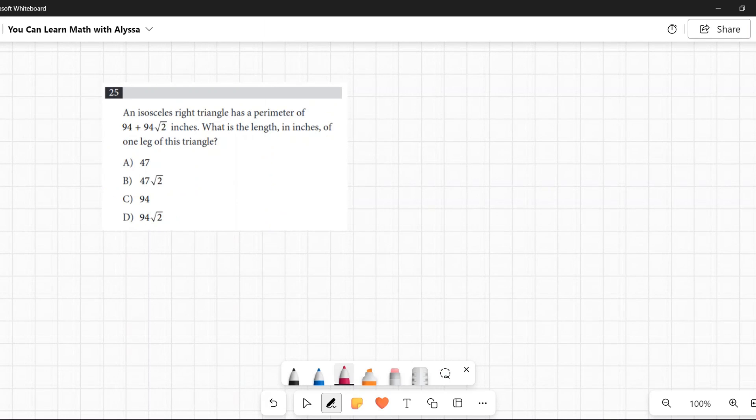Number 25: An isosceles right triangle has a perimeter of 94 plus 94 square root of two inches. What is the length in inches of one leg of this triangle? Oh my goodness, the answer they gave for this one - I am not a fan of their method. I think it's cumbersome and unnecessarily difficult.